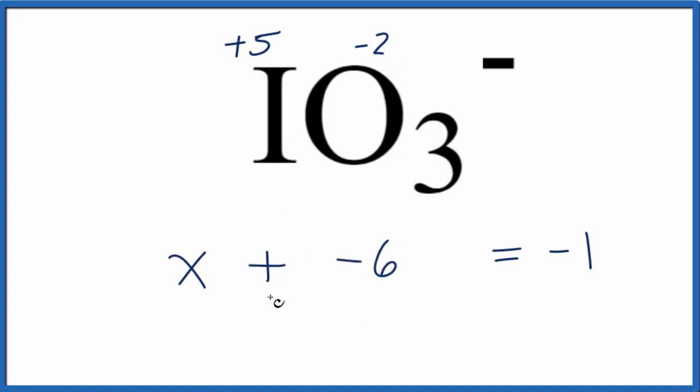We want to get X by itself. We'll add six to both sides, that'll cancel out the six here, and six and minus one, that's plus five, which is the oxidation number on the iodine that we found earlier.